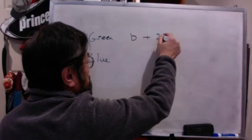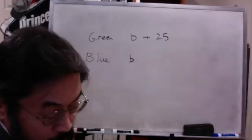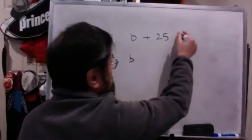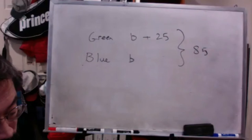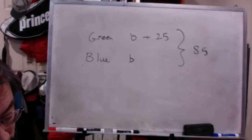And then two Bs are 85 minus 25. So I subtracted 85 minus 25 equals 60. So that means two Bs is 60. And then I divided 60 divided by 2 equals 30. So then that means B is 30.